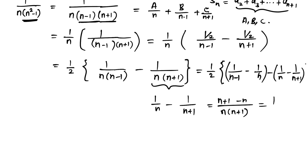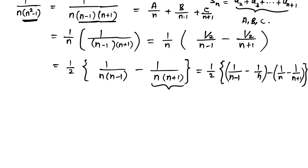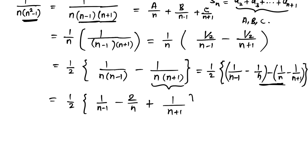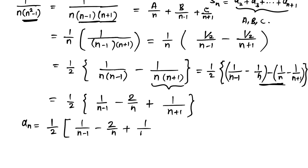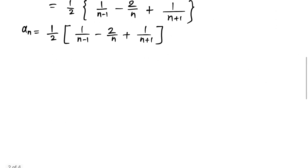Simplifying, we get aₙ = 1/2 · [1/(n-1) - 2/n + 1/(n+1)]. This is our general term aₙ.